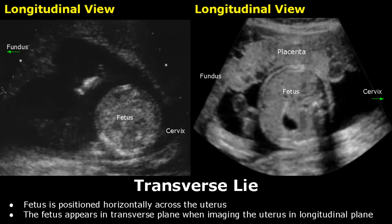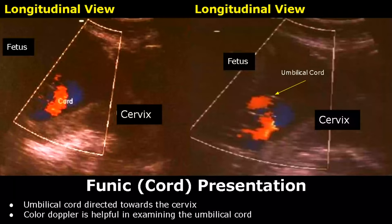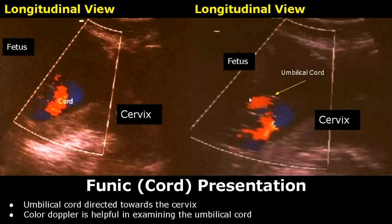In a funic or cord presentation, the umbilical cord is found right next to the cervix. Color Doppler is very helpful in locating the umbilical cord.